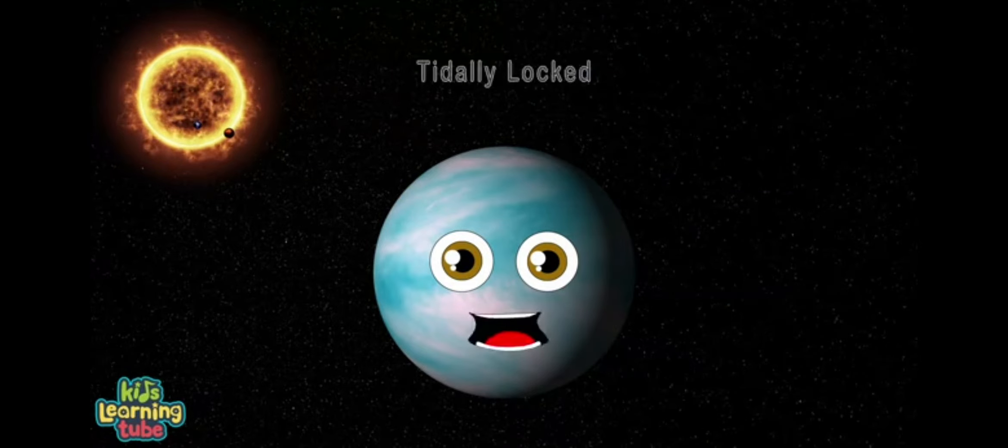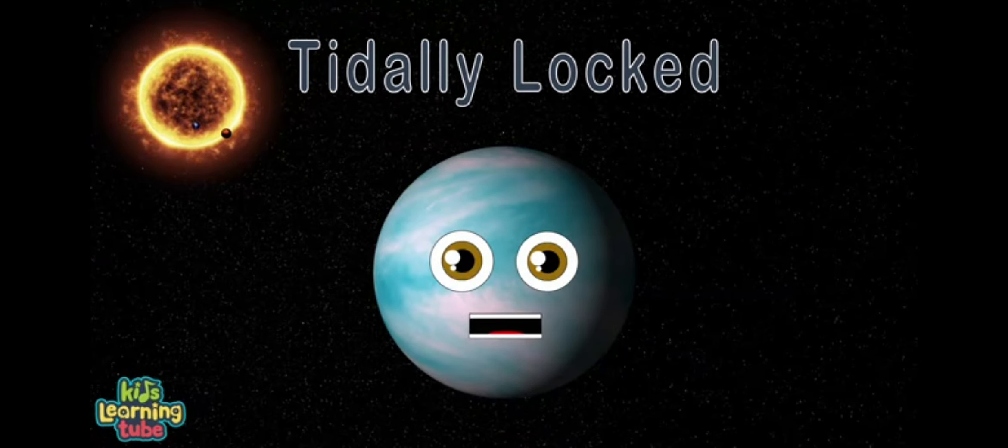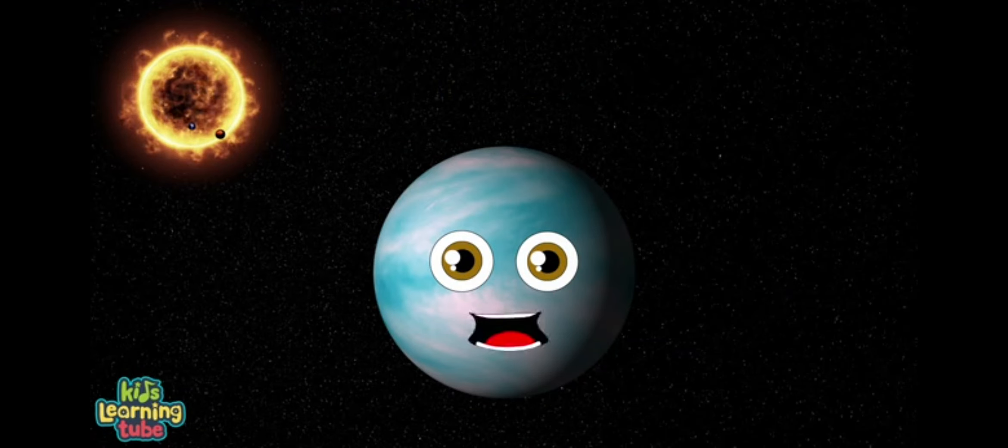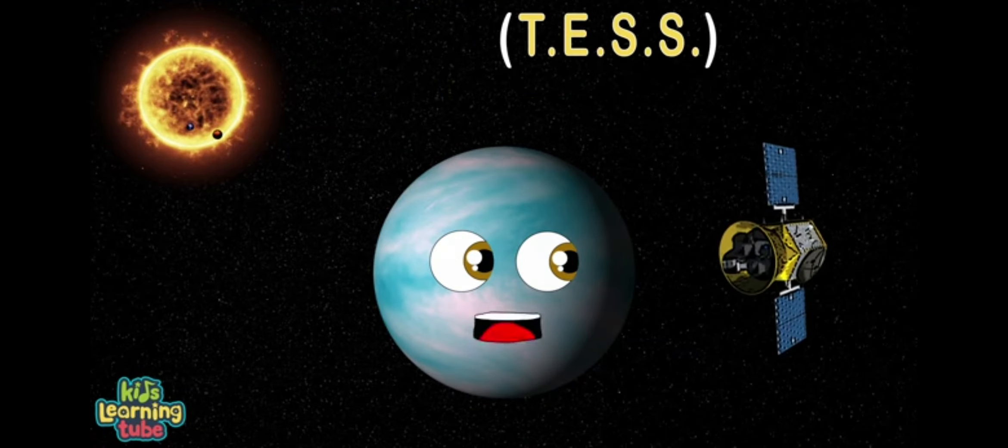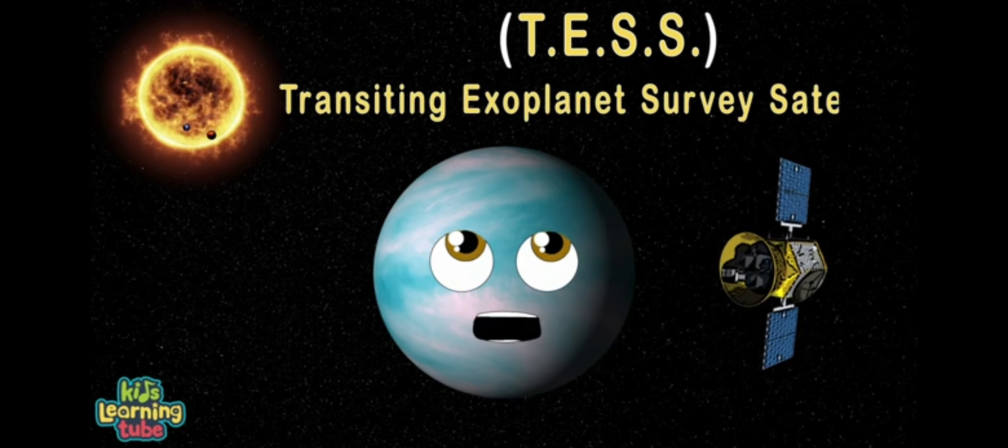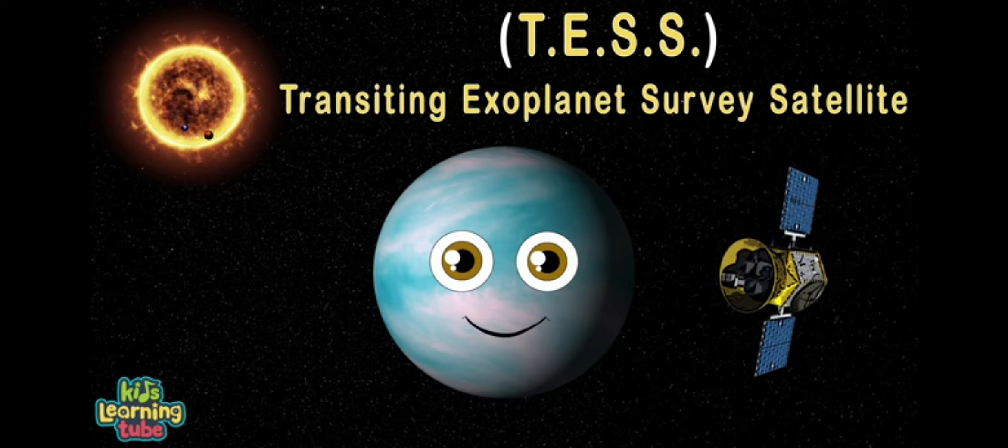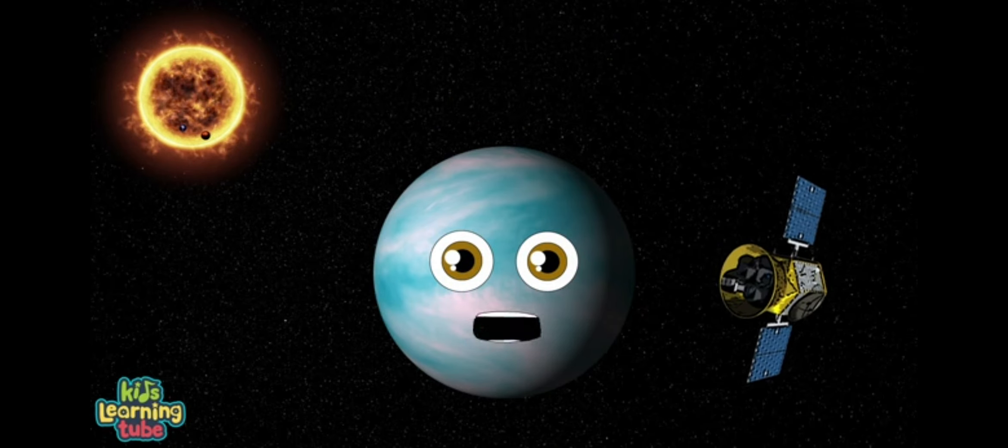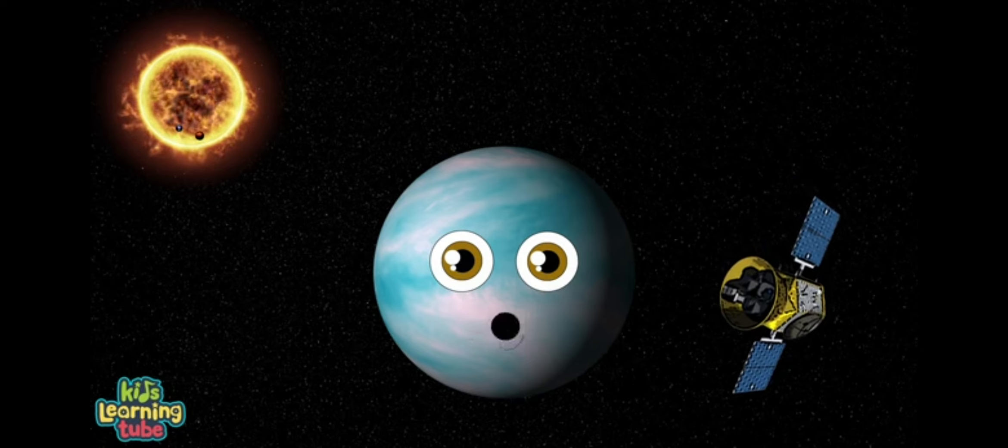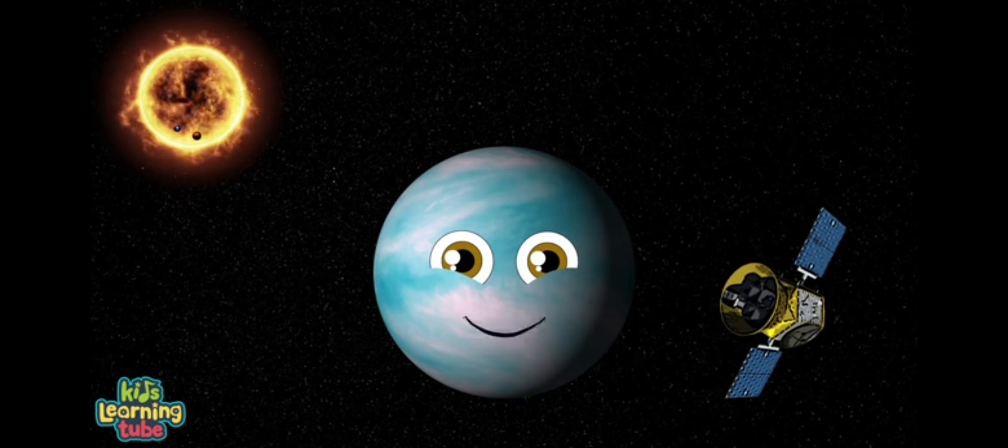All three exoplanets may be tidally locked, I do sing, which means the same phases towards the object we are orbiting. I was discovered by TESS to see planets out of sight, called the Transiting Exoplanet Survey Satellite. TESS was designed and launched specifically to find Earth-sized planets orbiting nearby stars like me.